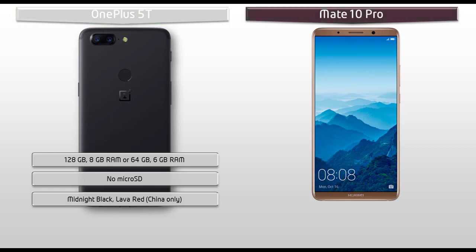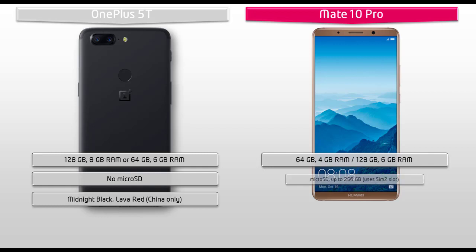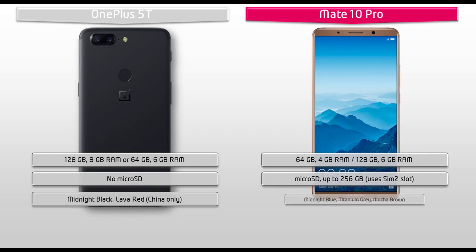Moving on to the Mate 10 Pro, it is available with 64 GB ROM and 4 GB RAM, and 128 GB ROM with 6 GB RAM, and also supports microSD up to 256 GB using the SIM 2 slot. Huawei has produced this device in midnight blue, titanium gray, and mocha brown colors.